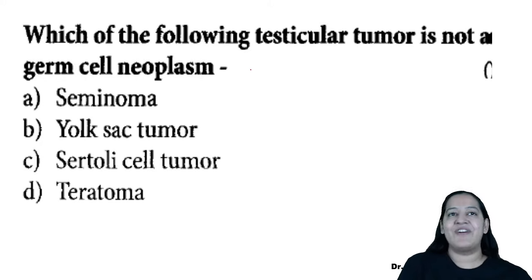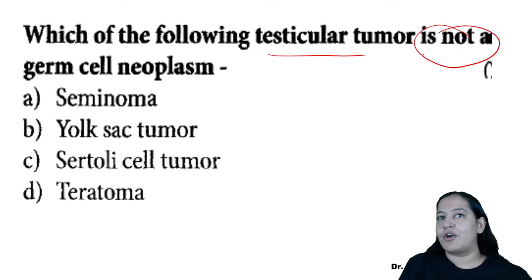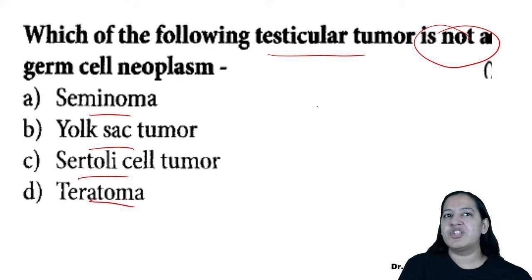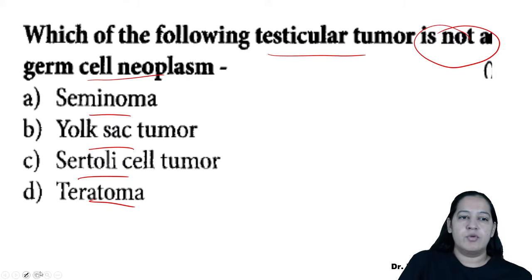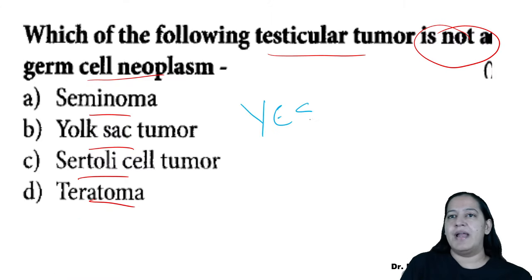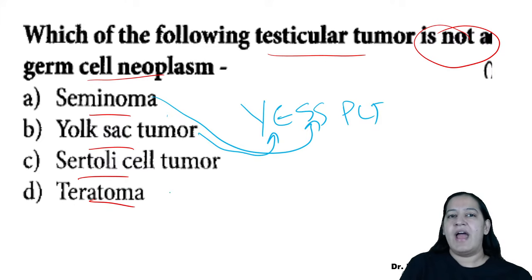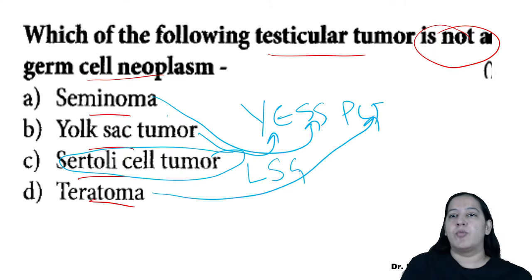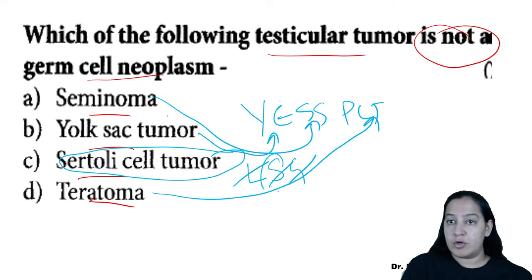Second MCQ: 'Which testicular tumor is NOT a germ cell neoplasm?' Options: Seminoma, Yolk sac, Sertoli, Teratoma. If you know the mnemonic YESSPCT for germ cell tumors, seminoma, Yolk sac tumor, and teratoma are all included. But Sertoli cell tumor comes under the sex cord stromal mnemonic LSG. So correct answer is C — Sertoli cell tumor.